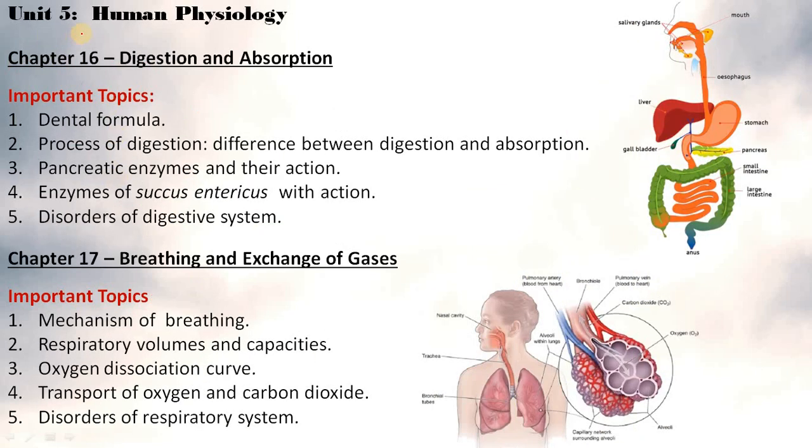Coming to the last and most important unit, Human Physiology. Chapter 16 Digestion and Absorption important topics are dental formula, process of digestion and absorption, pancreatic enzymes and their actions, enzymes of succus entericus with their actions, disorders of digestive system. Breathing and Exchange of Gases important topics are mechanism of breathing, respiratory volumes and capacities, oxygen dissociation curve, transport of oxygen and carbon dioxide, disorders of respiratory system.